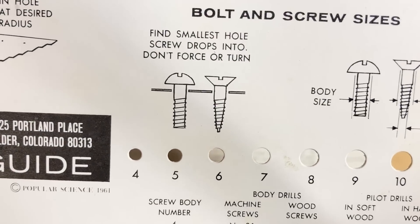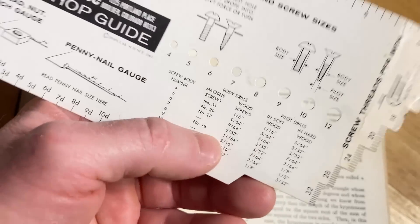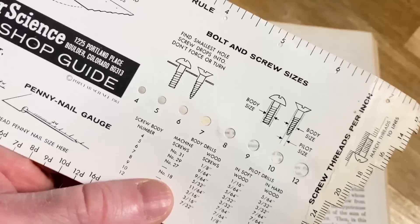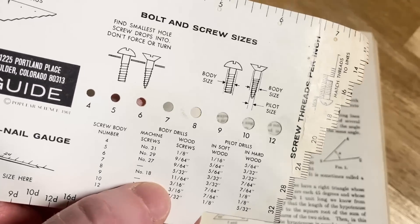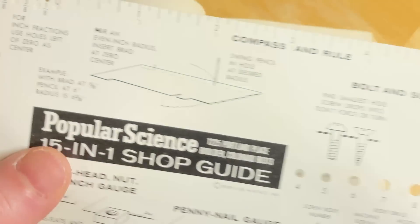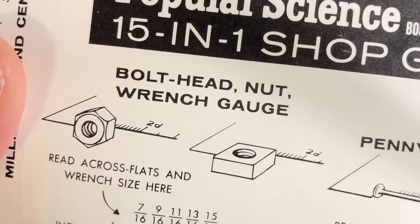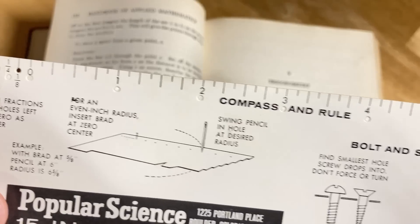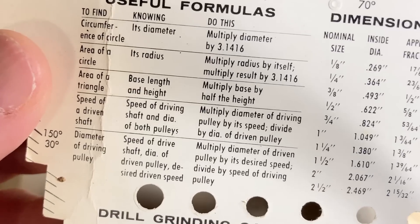Bolt and screw sizes. Find the smallest hole screws drop into. Don't force or turn. I see. So, you can use this to measure screws. I feel like I've seen this at, I went to a local hardware shop a long time ago, and I was trying to find some screws to do some type of home improvement thing in the bathroom or something, and I had to find certain screws, and I used this little guide at the hardware store to find out what screw I needed for my project. I don't remember what the project was. Bolt head, nut, wrench, gauge. And then it's got a ruler here, and compass and rule here. What's it say here? Useful formulas.